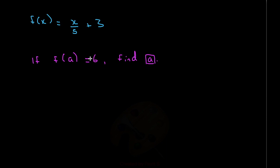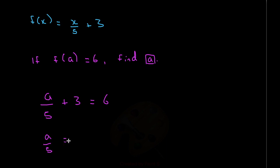So now we need to work backwards — we need to find a, we need to find the input. To do that, we need to set the function equal to 6. Writing it in terms of a, because a is our input: a over 5 plus 3 is equal to 6. Let's just work backwards. From this, we get a over 5 is equal to 3 — we subtract 3 from both sides. Then we multiply both sides by 5, and we get a is equal to 5 times 3, which is 15. So our input is 15.